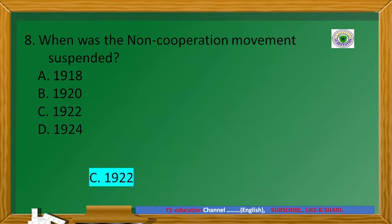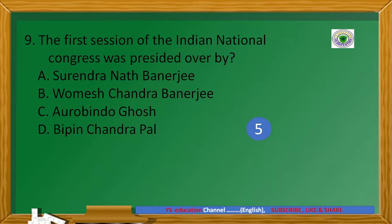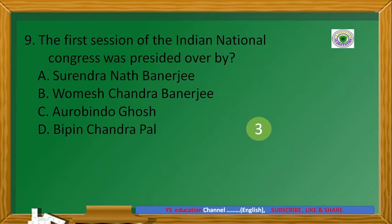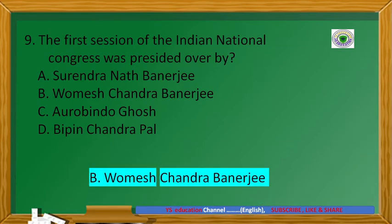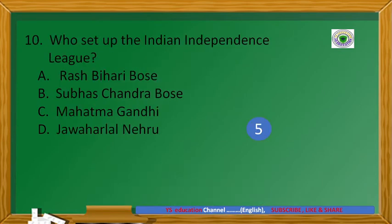When was the Non-Cooperation Movement suspended? Answer: 1922. The first session of the Indian National Congress was presided over by answer B, W.C. Banerjee. Who set up the Indian Independence League? Answer: Rash Behari Bose.